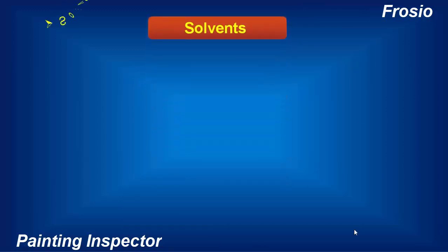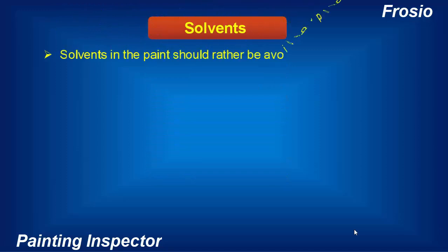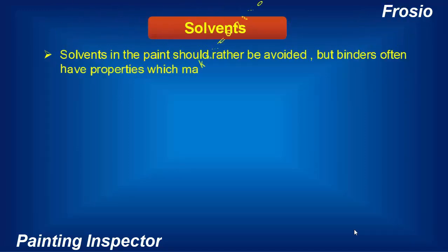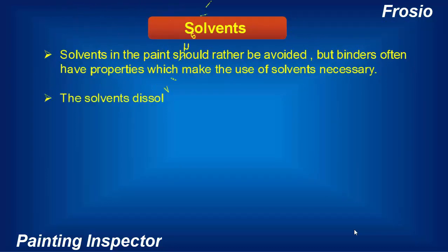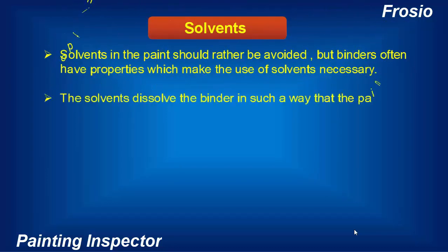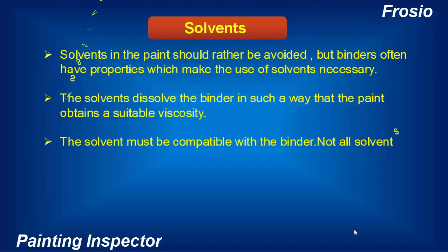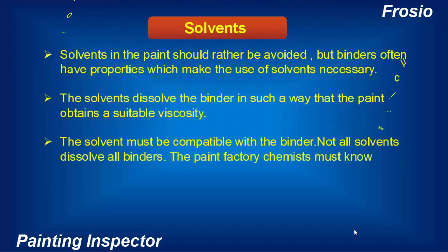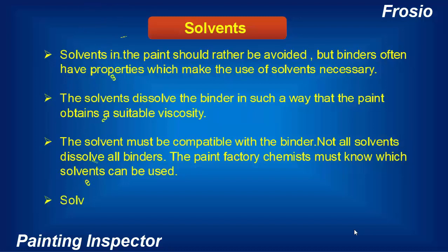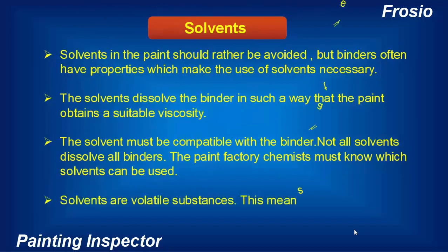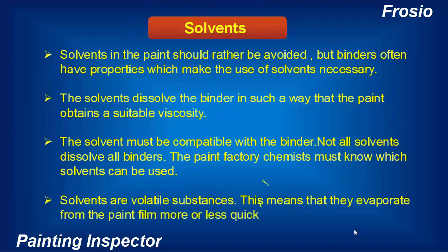Solvents in the paint should rather be avoided, but binders often have properties which make the use of solvents necessary. The solvents dissolve the binder in such a way that the paint obtains a suitable viscosity. The solvent must be compatible with the binder, as not all solvents dissolve all binders. The paint factory chemists must know which solvents can be used. Solvents are volatile substances, meaning that they evaporate from the paint film more or less quickly.